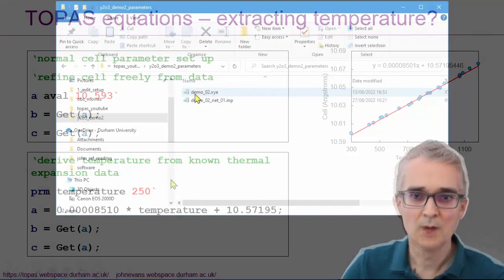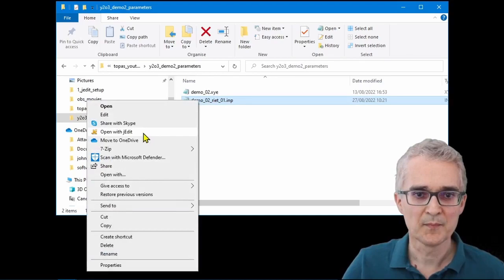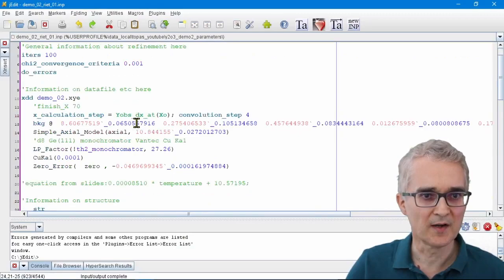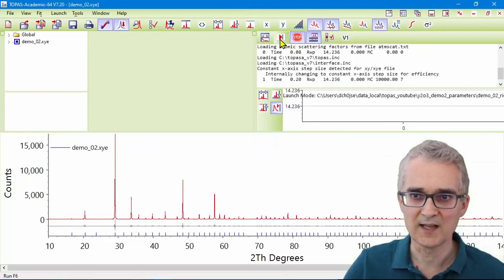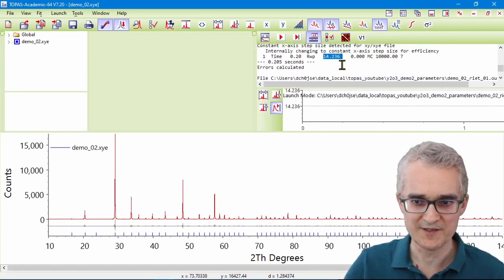So let's just try doing that in a simple example. So what I've got here is the input file that we set up previously for doing this Y2O3 Rietveld refinement. So let me just open that in jedit. And so here's the input file that we had previously. Let me just send that to TOPAS and let me launch TOPAS.